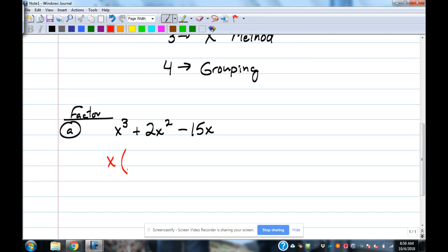So the GCF is going to be x. When we pull an x off of each piece, what does this one turn into? x squared plus 2x minus 15. We pulled the GCF out. It had to be a letter this time. When we were doing this with quadratics, it was usually just a number that we could pull out. Here we're going to have some letters we can pull out.